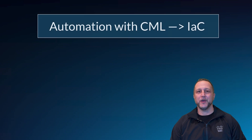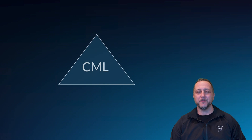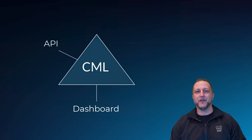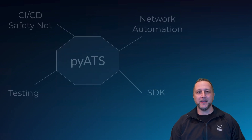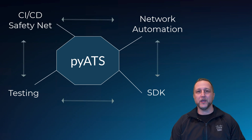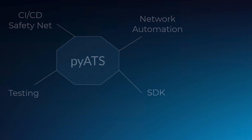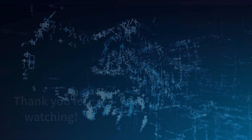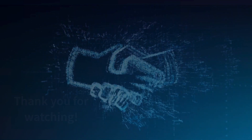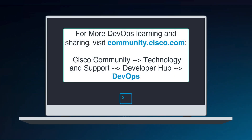In this video, we've seen how we can use automation with CML to construct our infrastructure as code. We've interacted with CML via the dashboard, via the API, and via the VIRL2 Client Library, resulting in a pyATS testbed we can use for our CI/CD pipeline. I hope you've enjoyed this video. Thank you, and have a great day. To learn more about DevOps at Cisco — to share, to network, to grow — visit us at community.cisco.com, under Technology and Support and the Developer Hub.